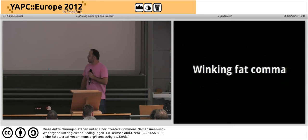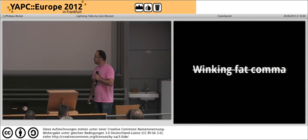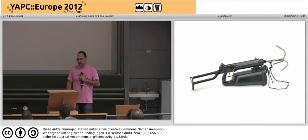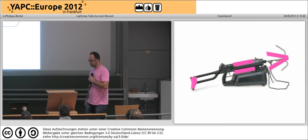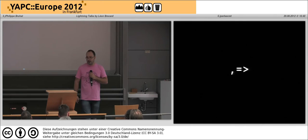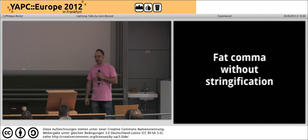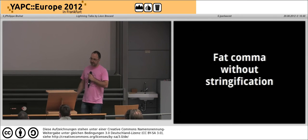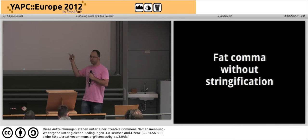So anyway, let's start. The first one is the winking fat comma. It's invented by Abigail, but I don't like the name. I prefer this one. So it basically looks like this. And what it does is actually disable the stringification on the left side of the fat comma. Abigail's name is better because it's really fat comma, but the winking part — I think this is an off switch.